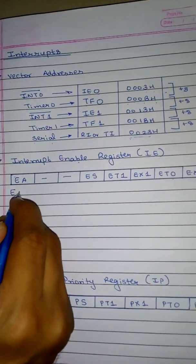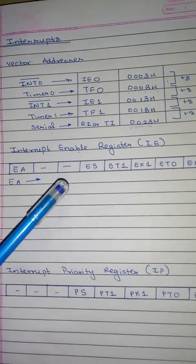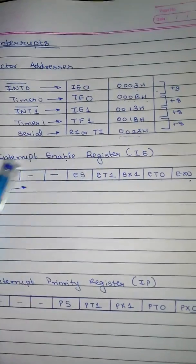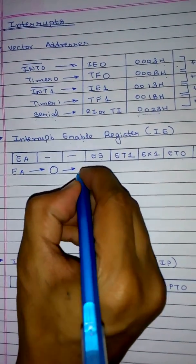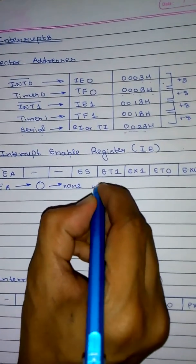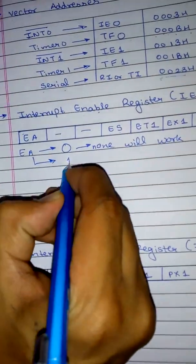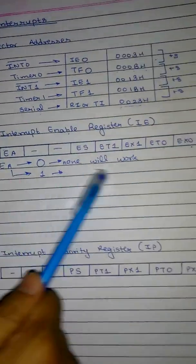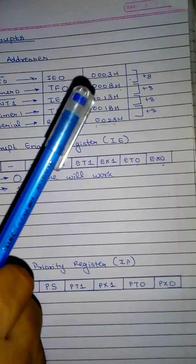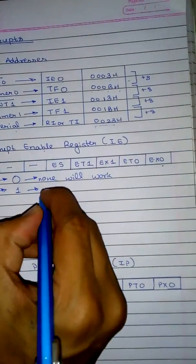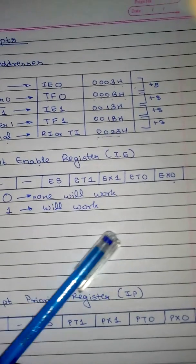The first and most important bit is EA. For exam purposes: if EA is zero, none of the other bits will work — the whole register will be redundant. If EA is one, that means some interrupts will work, but only the ones you have programmed. Not all of them will necessarily work.